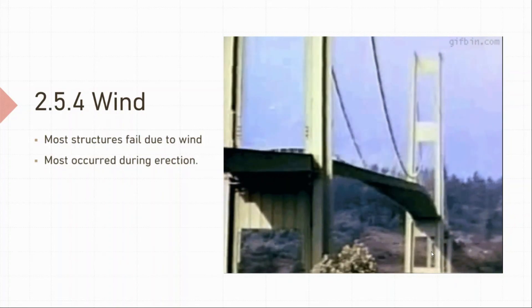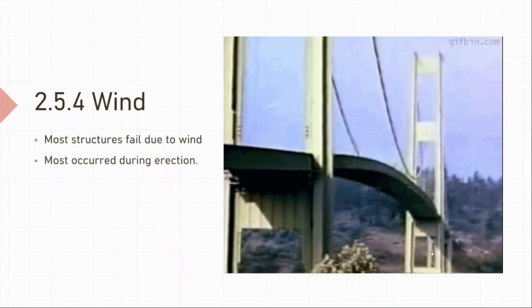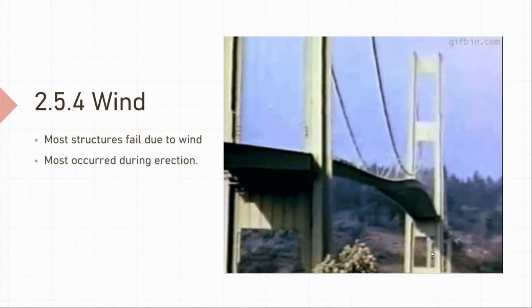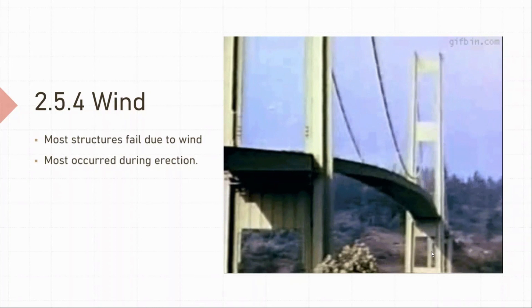Now, look at the clip on your right. And yes, it is real. This is a classic and one of the most discussed failures due to wind. This is the Tacoma Narrows Bridge in the state of Washington that failed due to wind loads. You can read more about it online. So, let's move ahead.